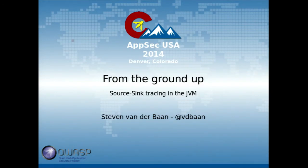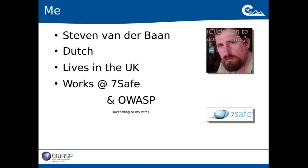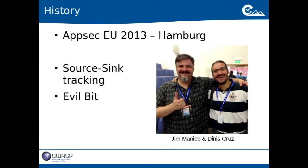My presentation is from the ground up — we'll talk about a little source-sink tracing within the JVM. My name is Steven de Baan, I'm Dutch, I live in the UK at the moment, and I work with SevenSafe and according to my wife also for OWASP. The project I'm going to talk about started about a year and a half ago at AppSec EU in Hamburg, where I was talking with Jim Manico and Dennis Cruz about source-sink tracing.